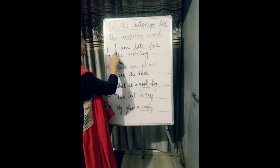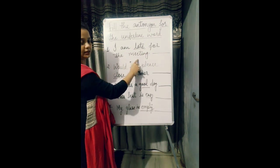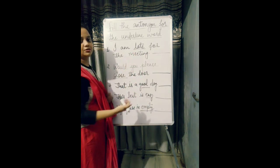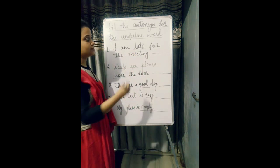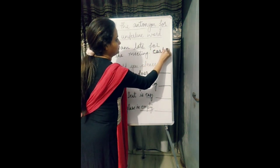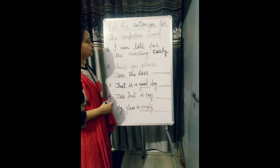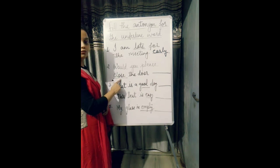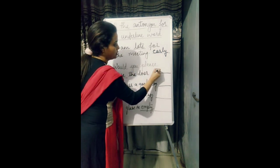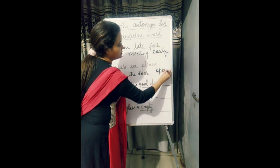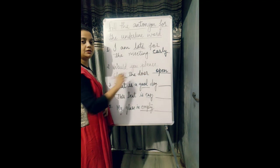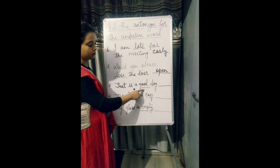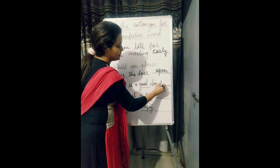So let's begin. First one: I am late for the meeting. The word late is underlined, so what is the antonym of late? The opposite is early. So the sentence becomes: I am early for the meeting. Next: would you please close the door? What is the antonym of close? Open. So the sentence becomes: would you please open the door? Next: that is a good dog. The opposite of good is bad — that is a bad dog.